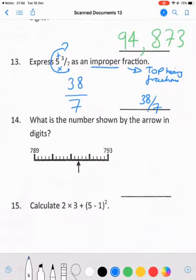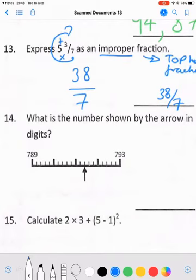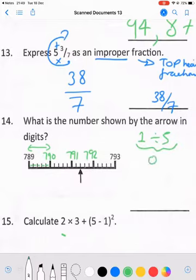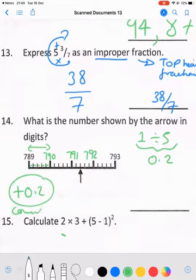Question number 14: What is the number shown by the arrow in digits? Let's have a look. 789 to 793, so that'll be 790, 791, 792, 793. If you have one number, 794, and you divide it amongst five equal segments, 1 divided by 5 gives us 0.2. So we are counting in 0.2: 791.2, 791.4.